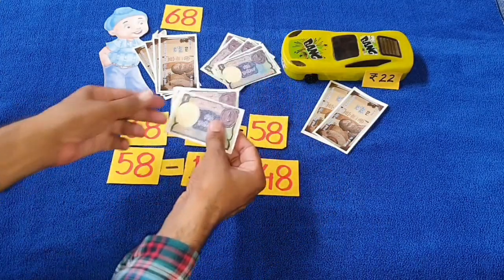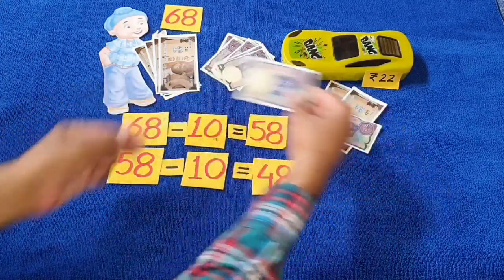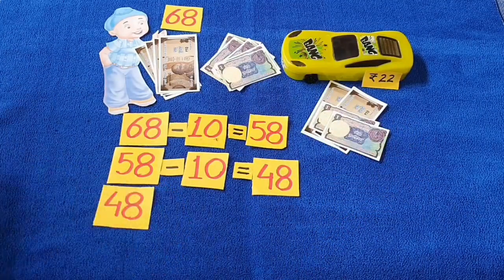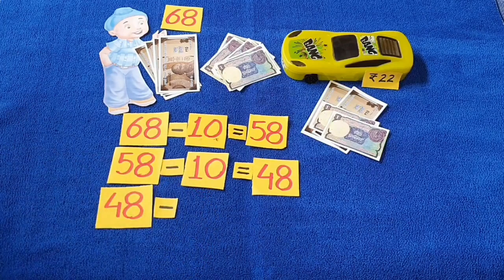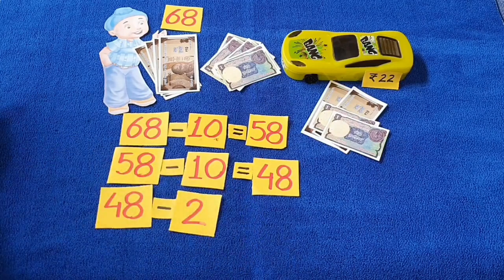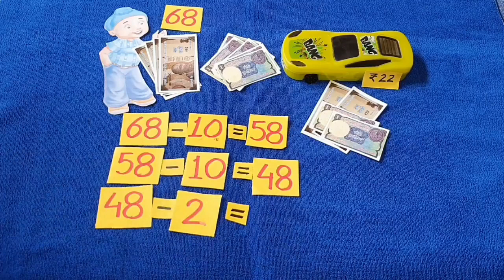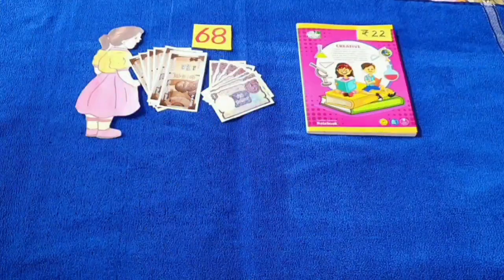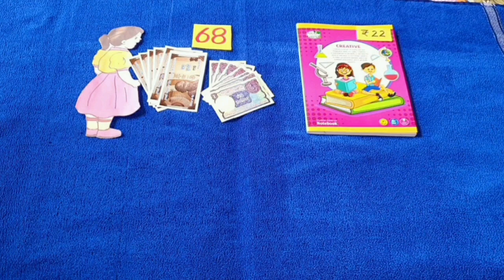Now, he gave 2 rupees to the shopkeeper. Sukhman had 48 rupees. He gave 2 rupees to the shopkeeper. How much money is left with Sukhman now? Yes, he is left with 46 rupees. Let's do this sum with another method now.